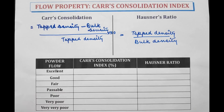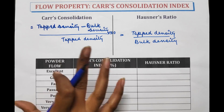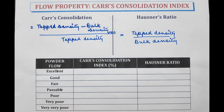Carr's index and Hausner's ratio are both determined by measuring the bulk volume and the tapped volume of the powder, because for calculating density we need to know the mass and volume of the powder. Carr's index and Hausner's ratio each have a particular range by which we can determine the powder flow.